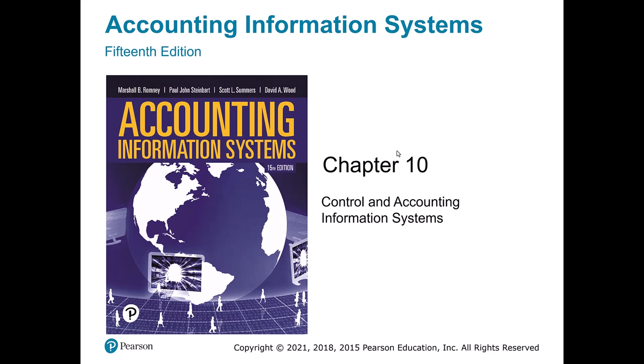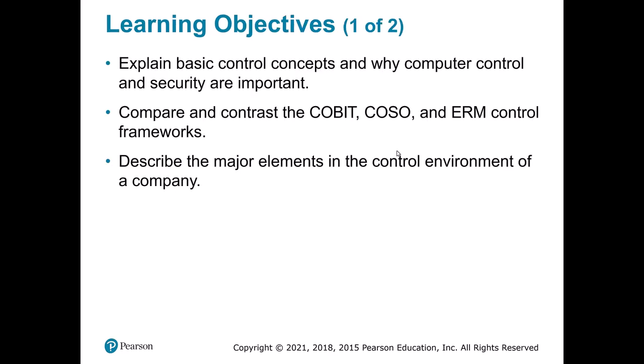Chapter 10 starts examining controls and how different controls are put in place to make sure our systems work properly and aren't being abused. This chapter introduces basic control concepts and the major control environment elements inside a company. It touches on specific frameworks like COBIT, COSO, and ERM, but for this class we'll keep it somewhat framework-abstract and focus on high-level concepts.